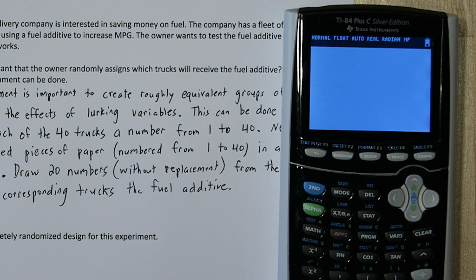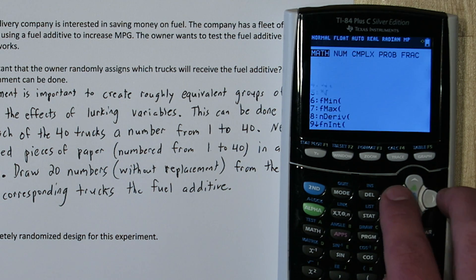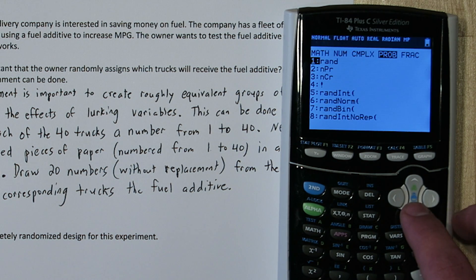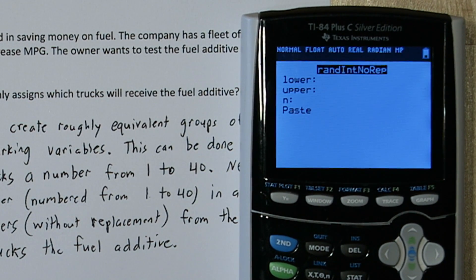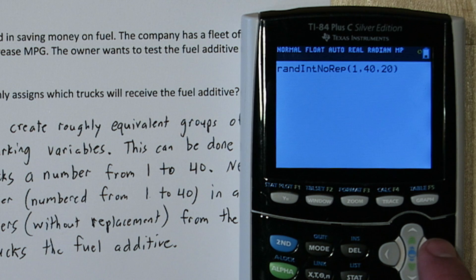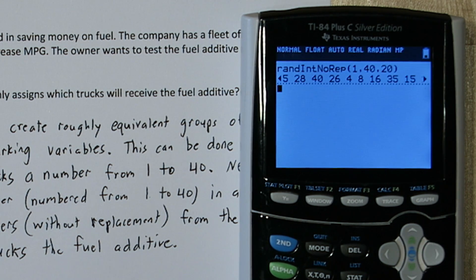If I was actually doing this random assignment, I'd probably use a calculator. If I press math and go over to PRB — probability — down here I have the random integer with no repeat option. I'm going to put 1 for my lower limit and 40 for my upper limit, and then put 20 for my sample size. When I press enter, it gives me the 20 trucks that I'll give the fuel additive to. That's a lot easier, but maybe not as easy to describe as the hat method.